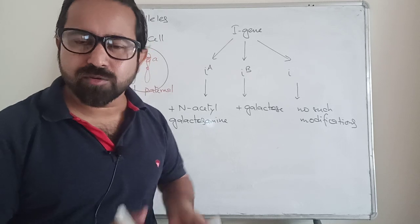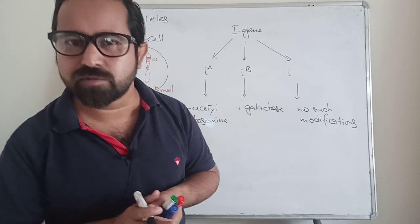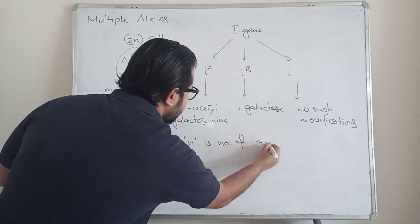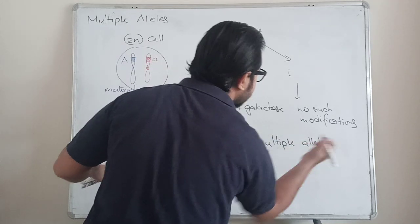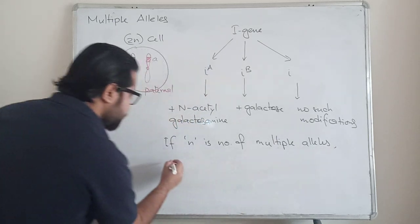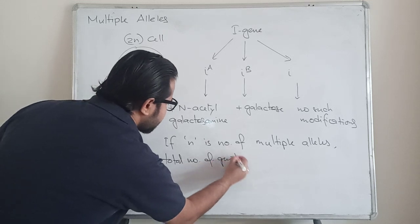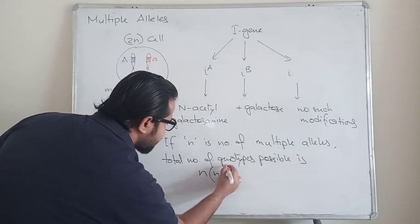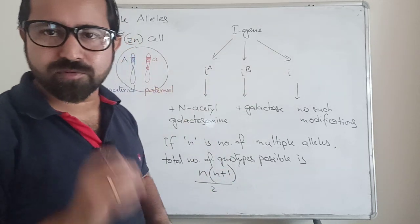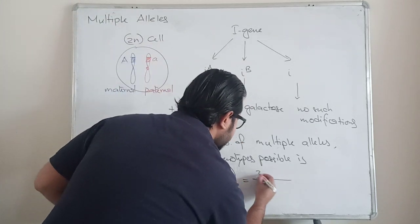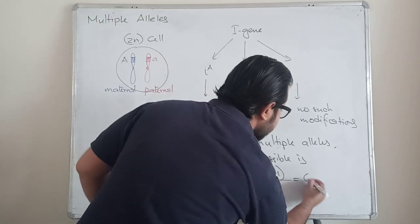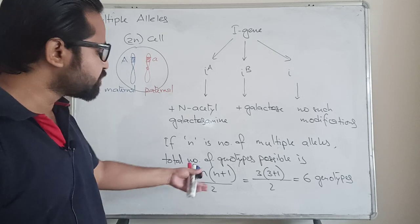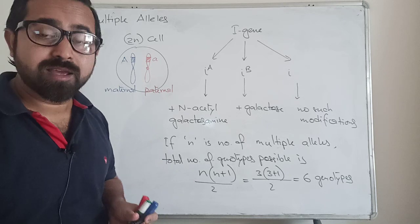If somebody asked you what kind of genotypes these three alleles can create, there is a very simple formula. If N is the number of multiple alleles, the total number of genotypes possible is N(N+1)/2. In this case we have three different alleles for the I gene, so placing three for N gives us six different genotypes. It's very easy to calculate — just put the number of alleles into the formula and you get the total number of genotypes.